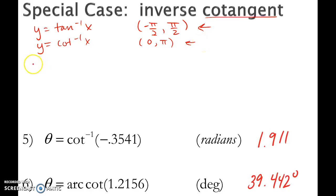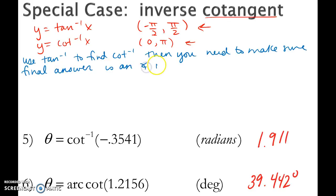So basically, to kind of sum this up, if you need to use the tan inverse button to find a cotangent inverse, then you need to make sure that the final answer is an angle in the correct range. And by range, I'm referring to these two sets of numbers right here.